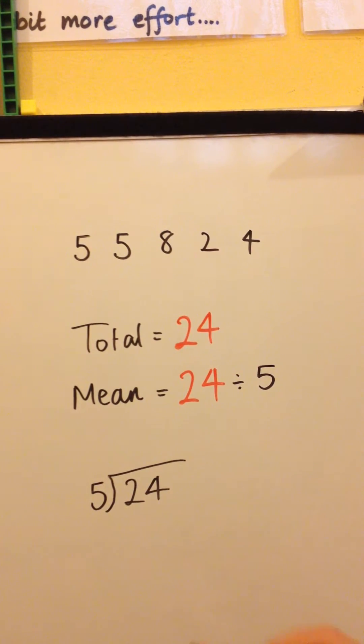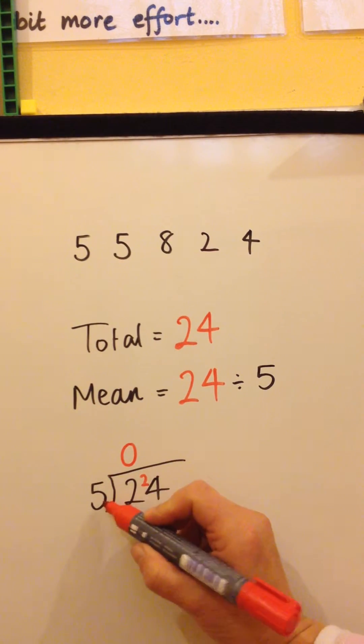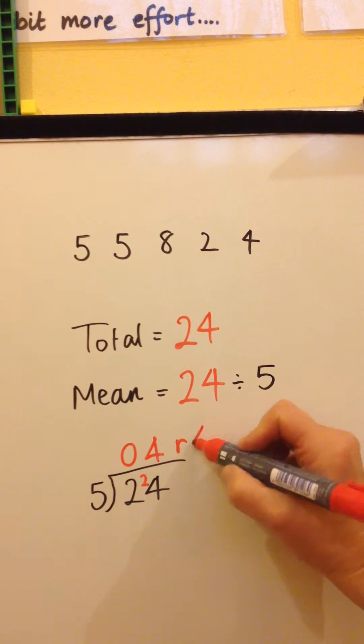That doesn't go exactly. Let's do a bus stop. How many fives in 2? The answer is 0, remainder 2. How many fives in 24? That would give us 4, but we'd end up with a remainder of 4.